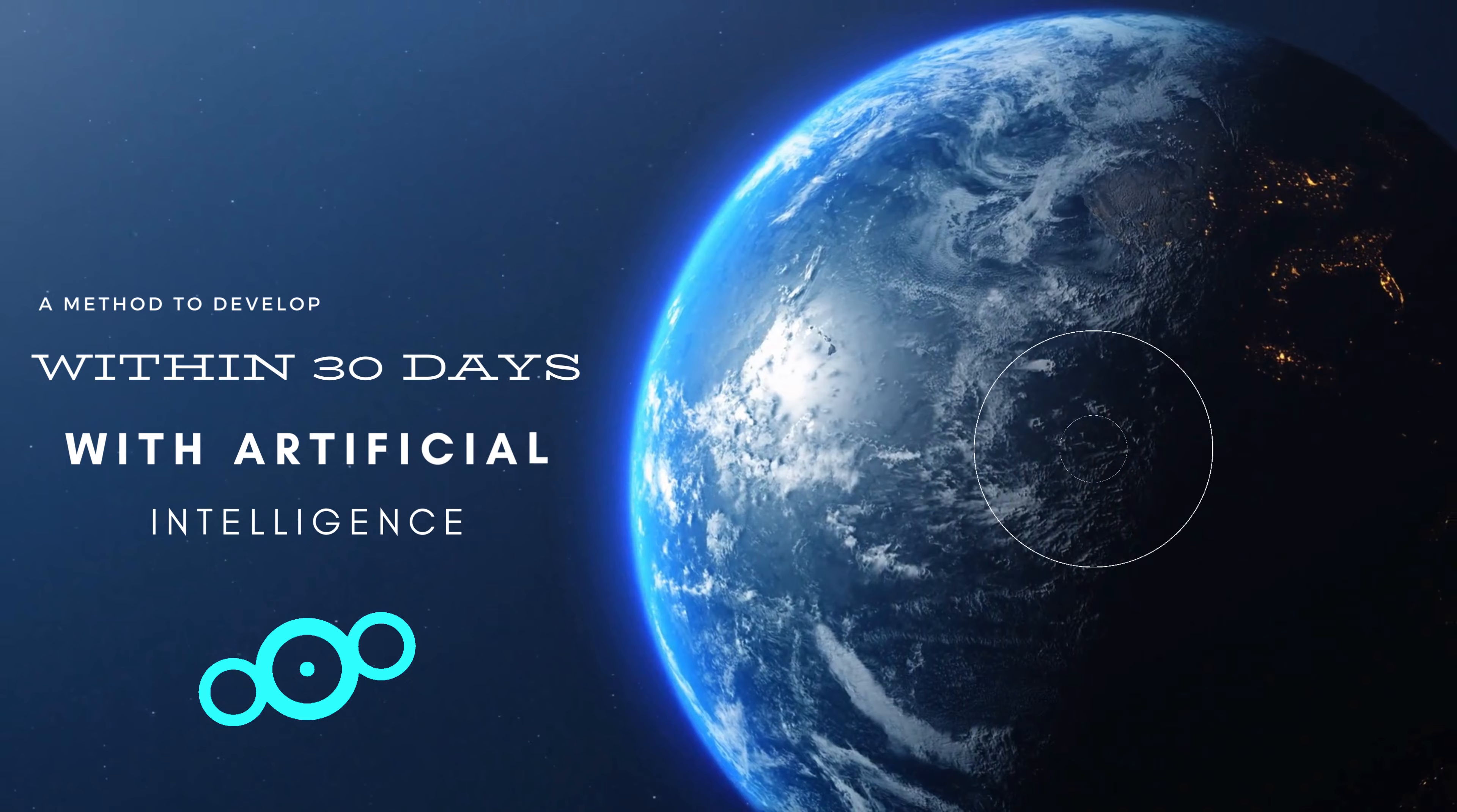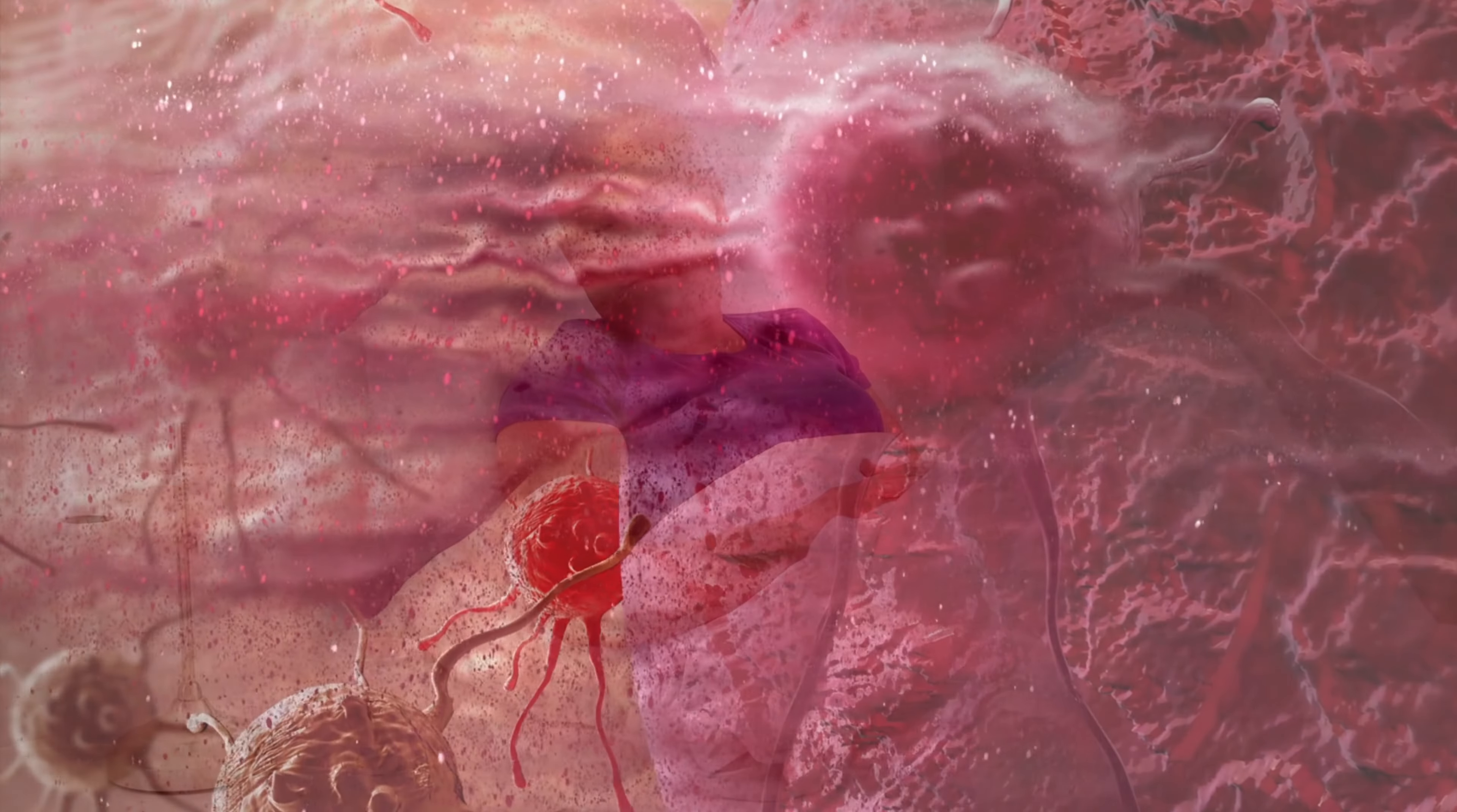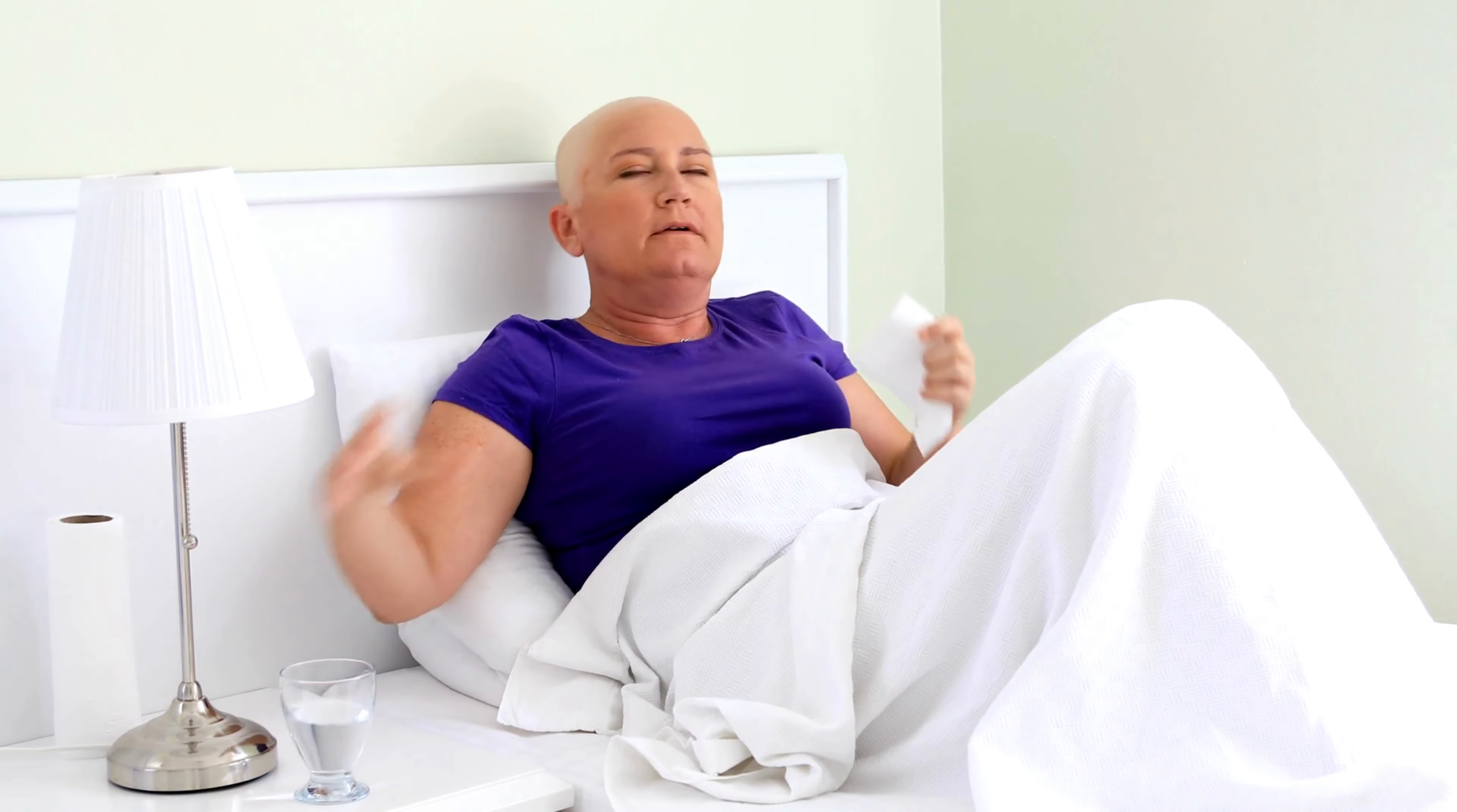A method to develop cancer treatment within 30 days with artificial intelligence. With the help of artificial intelligence, scientists have developed a treatment method in which cancer treatment is applied within 30 days. This method can also predict a patient's survival rate. Researchers at the University of Toronto have revealed a potential treatment for Hepatocellular Carcinoma, a type of liver cancer, with an artificial intelligence drug discovery platform called InSilico Medicine and Pharma.ai.